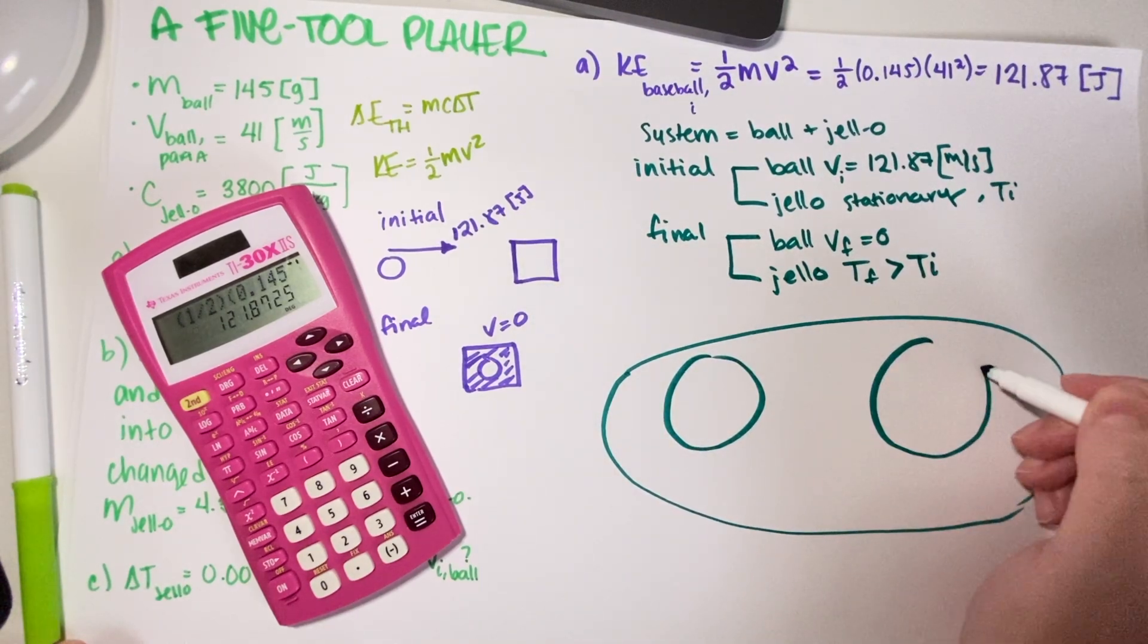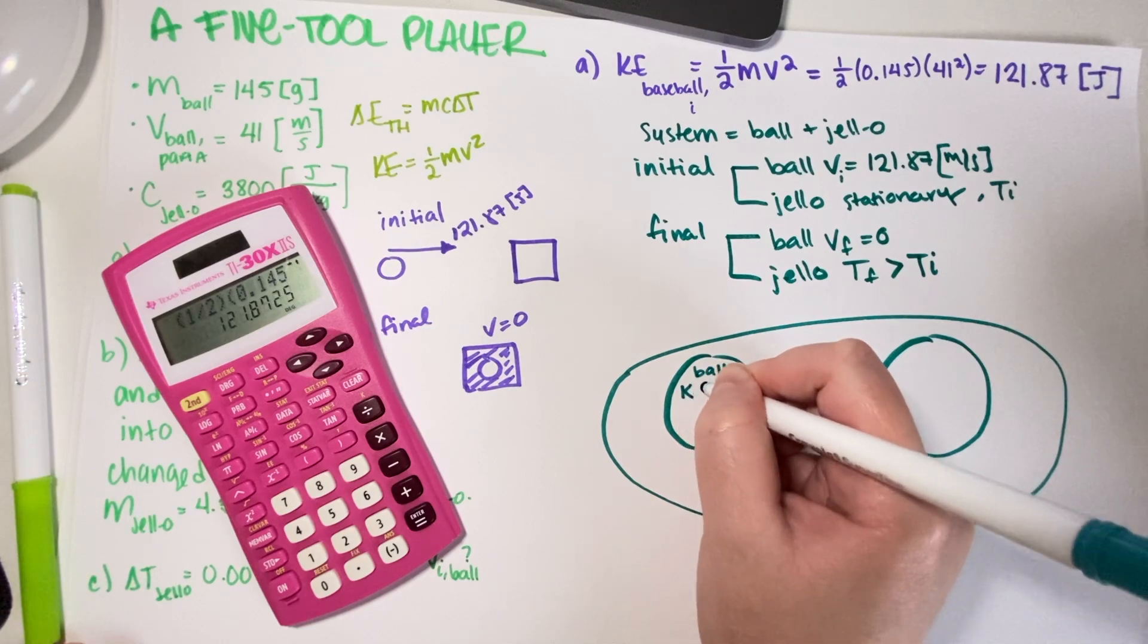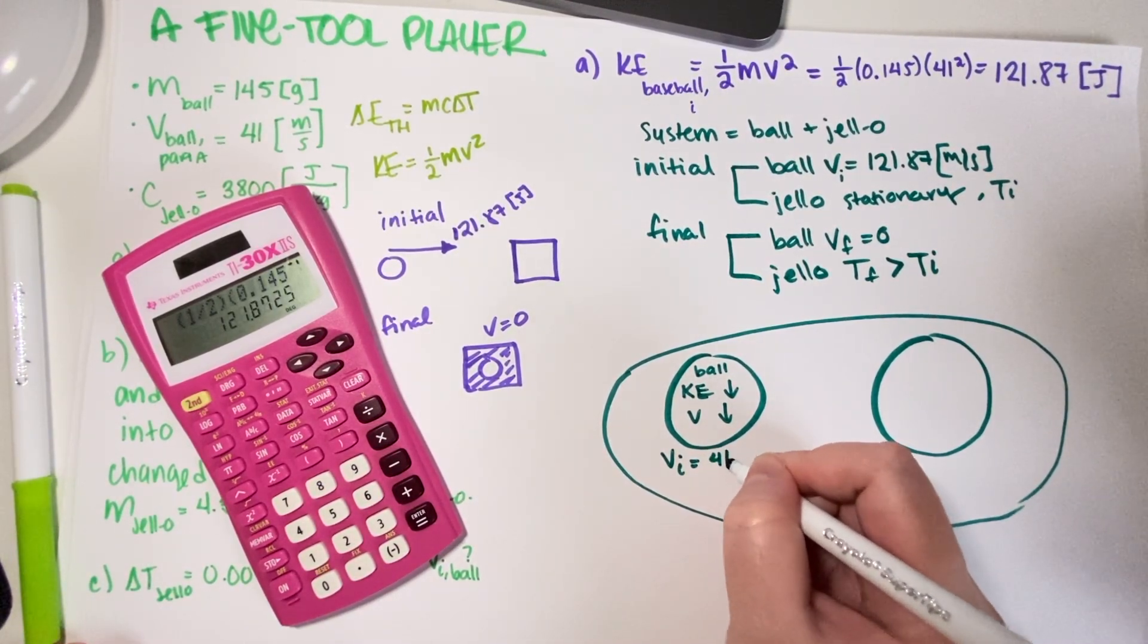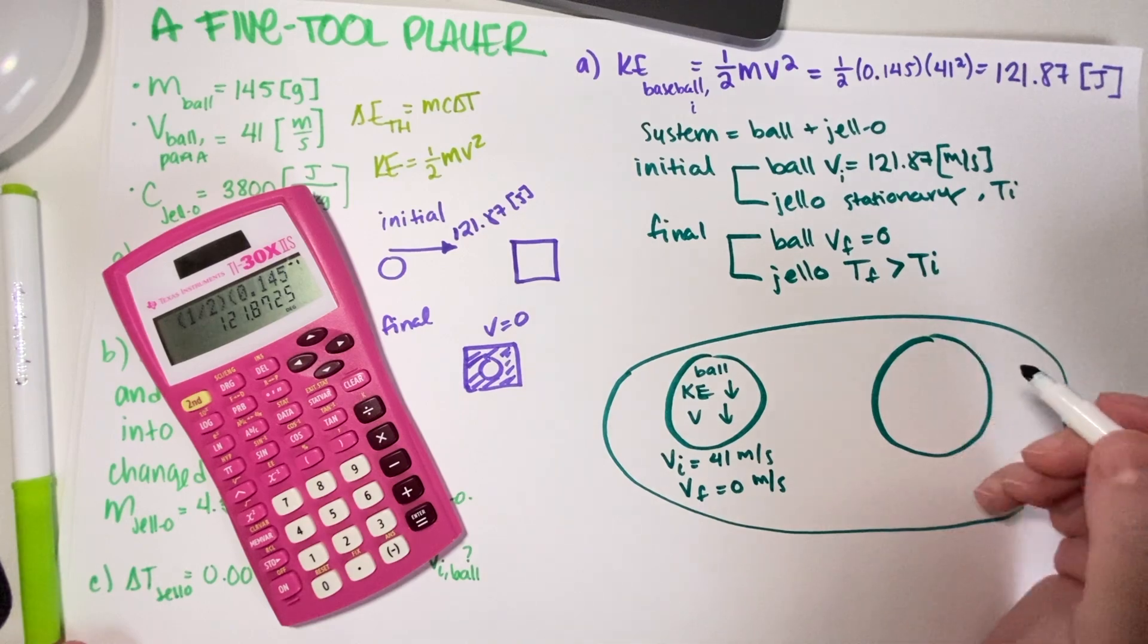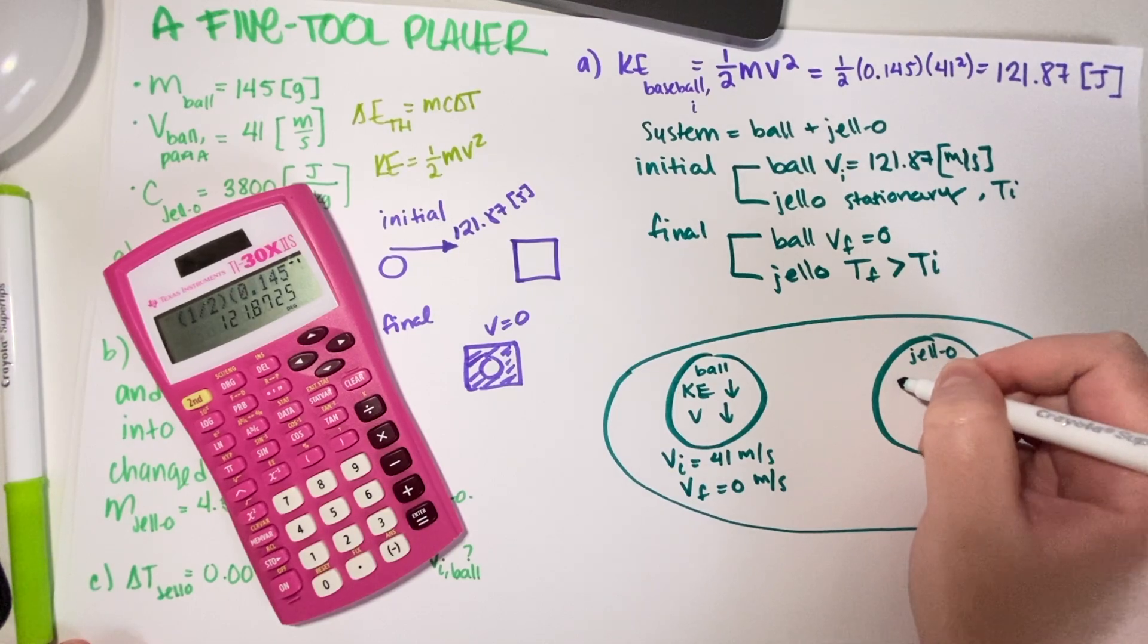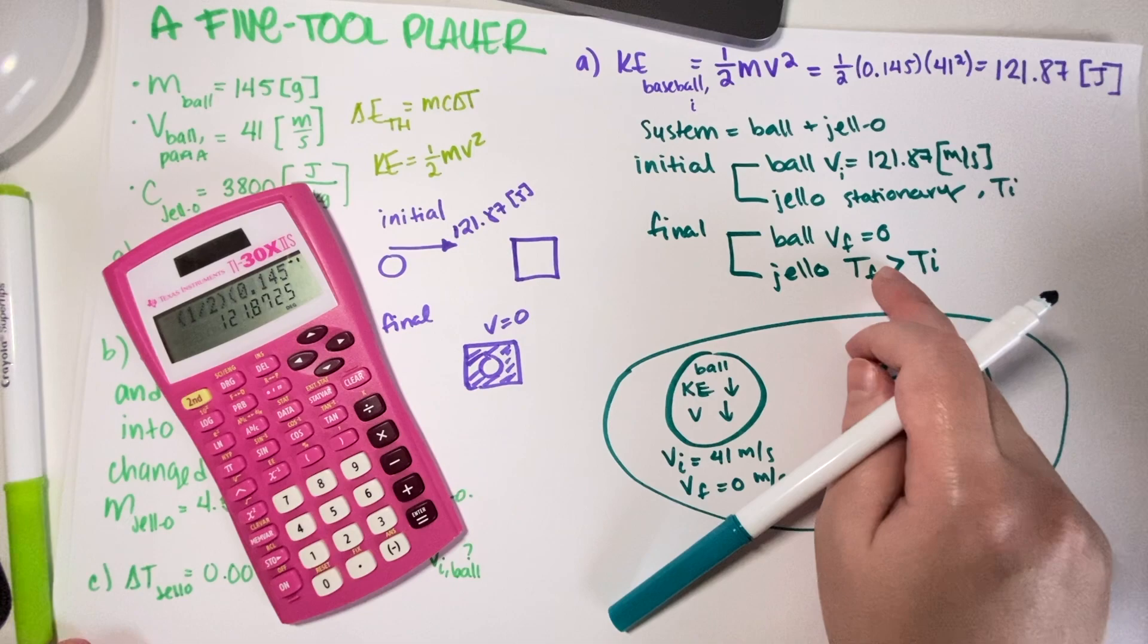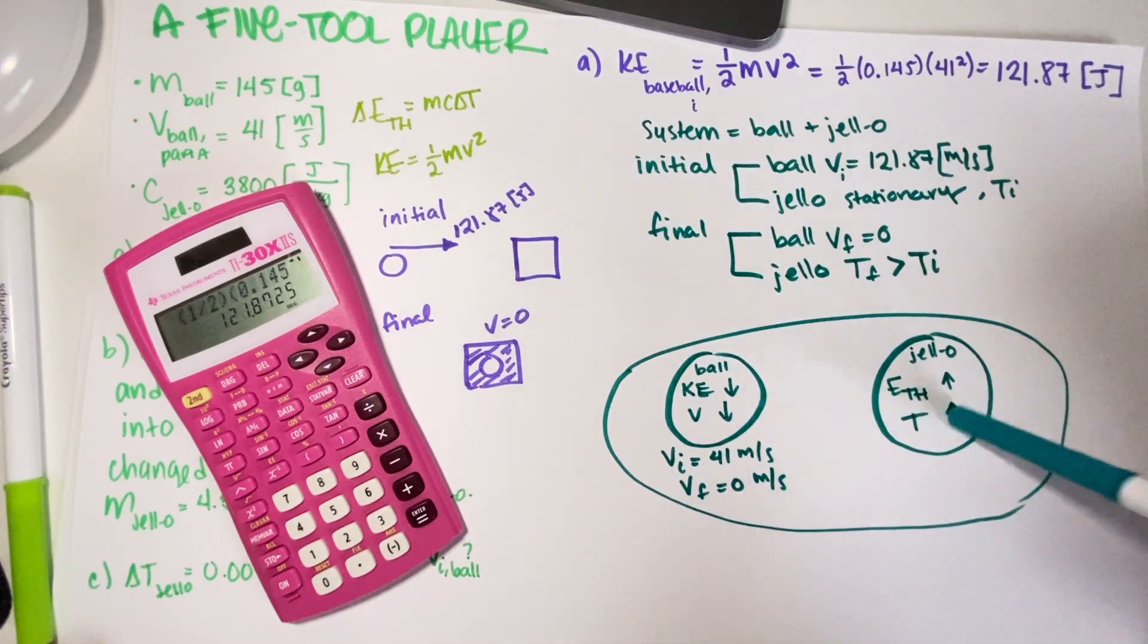And then your jello has some final temperature that's going to be greater than your initial temperature. The instructions say we should neglect air resistance and the effects of gravity, which means this system is closed. We're only going to have two types of energy: kinetic energy for the ball and thermal energy for the jello. The ball is going to be losing kinetic energy. This is a closed system, so for the jello its thermal energy must have gone up, which means its temperature must have gone up.